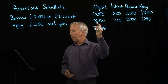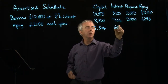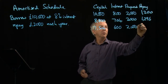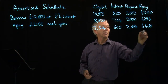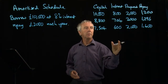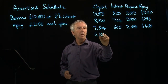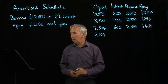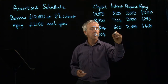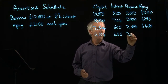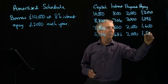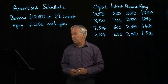The interest on £7,504 — 8% of that is £600 to the nearest pound. I paid back £2,000, so that means I actually repaid £1,400 of the capital. I subtract that, which takes me down to £6,104. 8% of that is £486. I paid them £2,000, so out of that £2,000, £1,514 was actually paying off the debt.